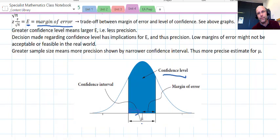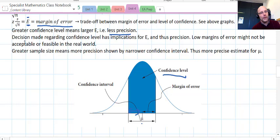Also, greater confidence level means larger margin of error, which is what the E is as we said, and that means we have less precision. Decisions made regarding what percentage we use has implications on the margin of error, as I just showed you. So that affects the precision as well. The higher percentage confidence means lower precision. Low margins of error might not be acceptable or feasible in the world that we're applying this.